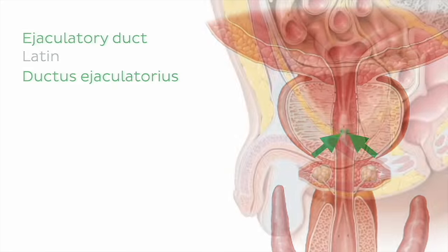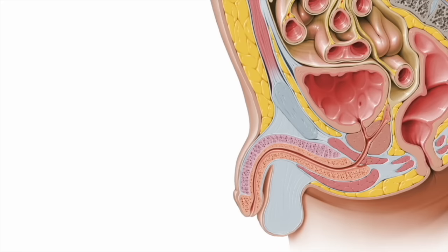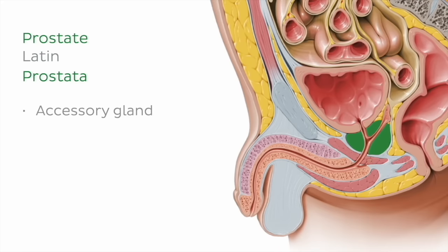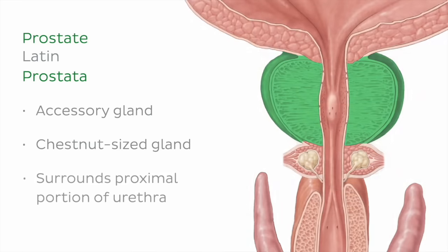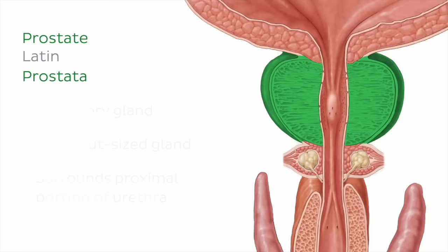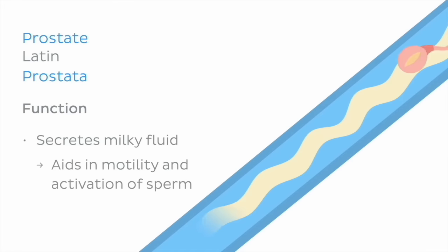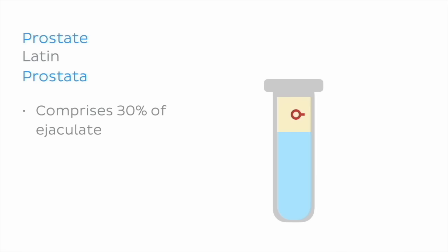Transitioning back to a sagittal view, we encounter our second accessory gland, the prostate gland. This chestnut-sized gland sits at the neck of the bladder and surrounds the proximal portion of the urethra. The prostate gland produces and secretes a milky fluid that aids in the motility and activation of sperm. This prostatic secretion comprises the remaining 30% of the volume of ejaculate.